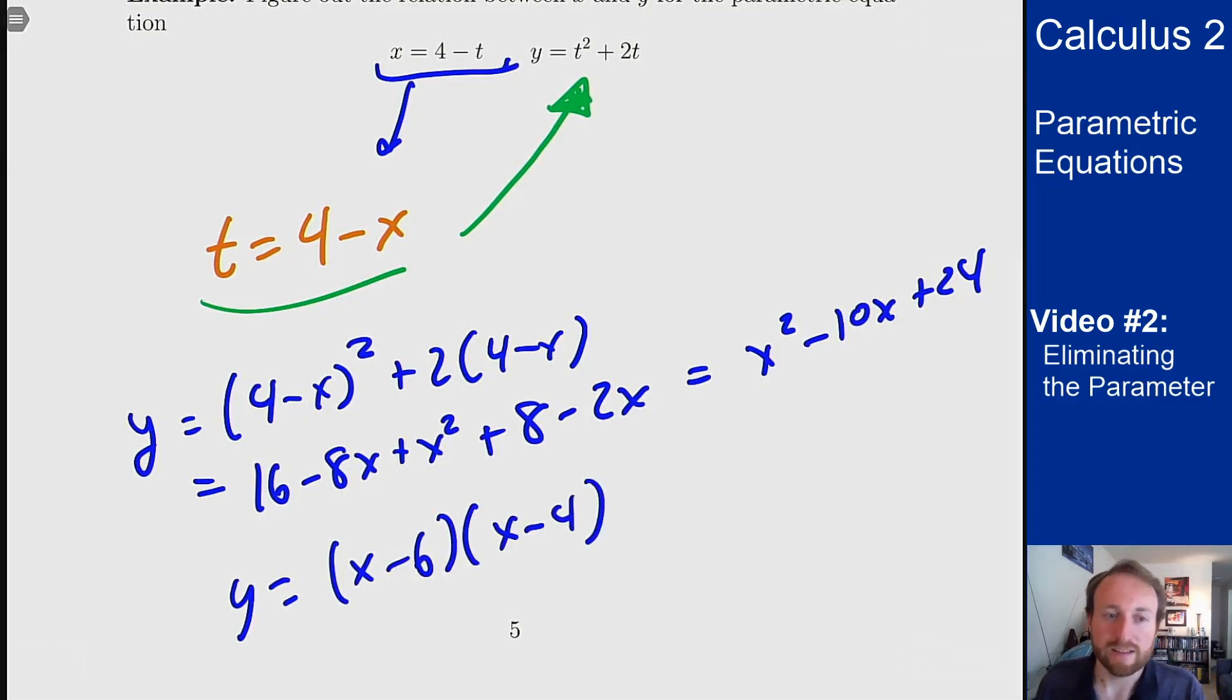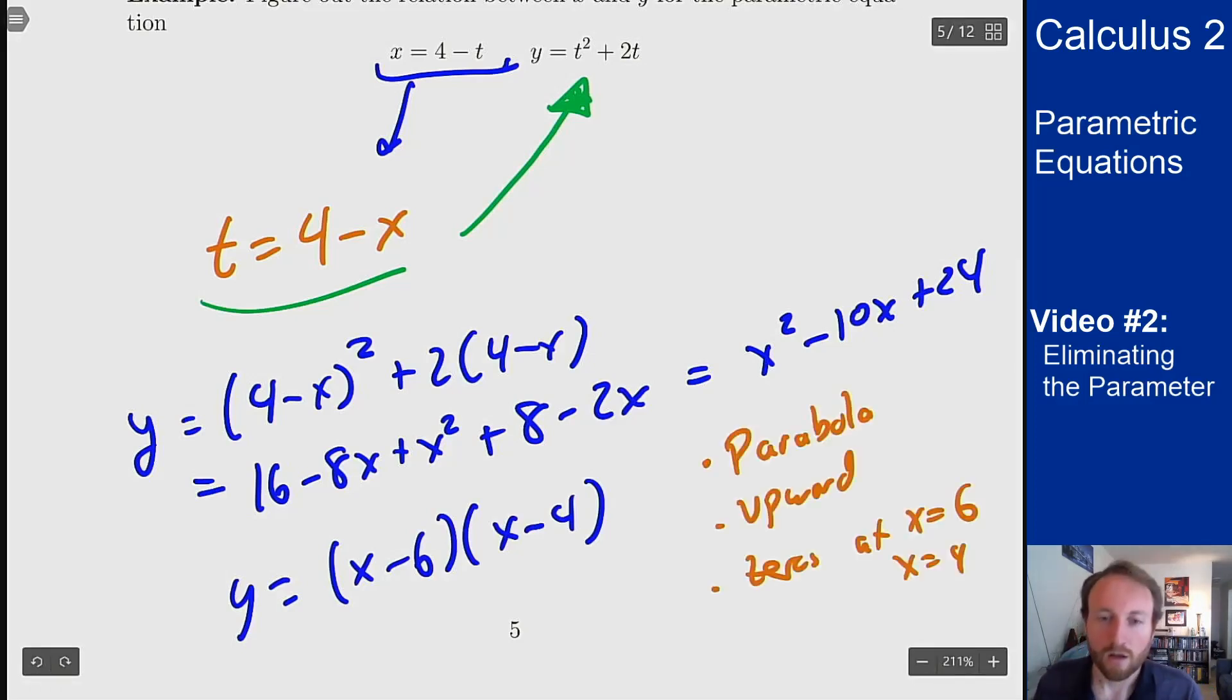So it's a parabola facing upward with zeros at 6 and 4, which is exactly what we saw when we sketched this out parametrically—its exact shape here. So that's one case of this problem where you can solve out for t and then see what's going on.